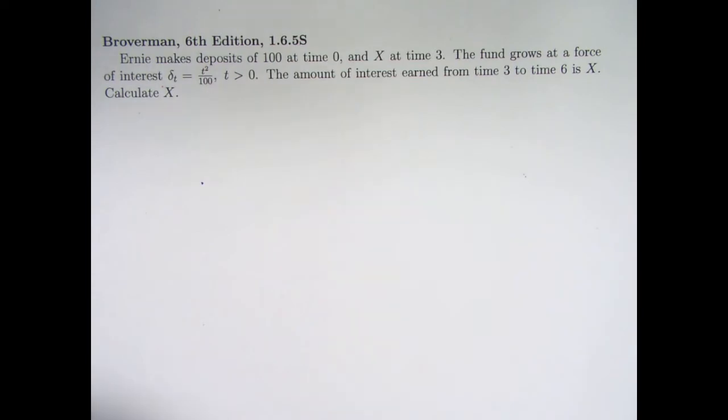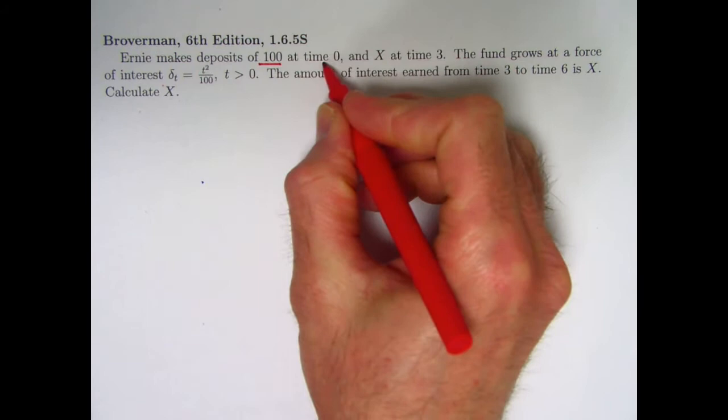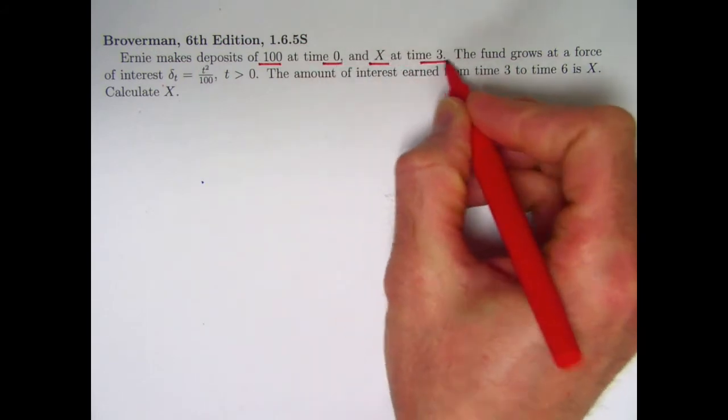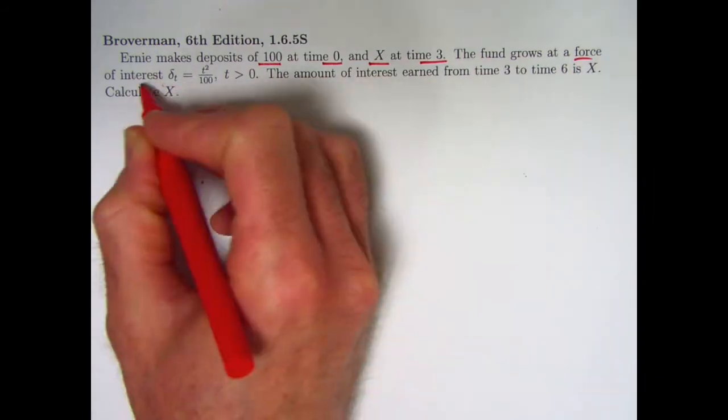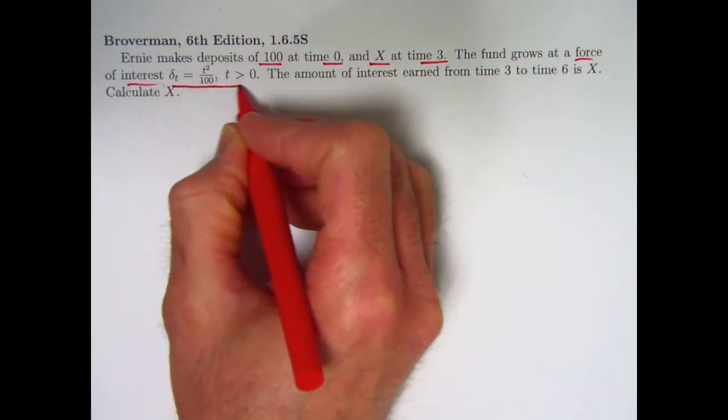So here we go. Ernie makes two deposits. A deposit of 100 at time 0 and a deposit of x at time 3. The fund grows at a force of interest equal to this function here.